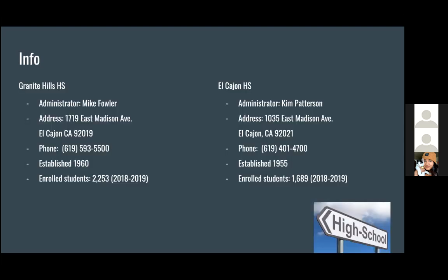Here's a little bit of information about the two high schools. They are located only two blocks apart. Granite Hill High School had 2,253 students enrolled in 2018–2019, and we have 1,689 students enrolled in El Cajon High School.